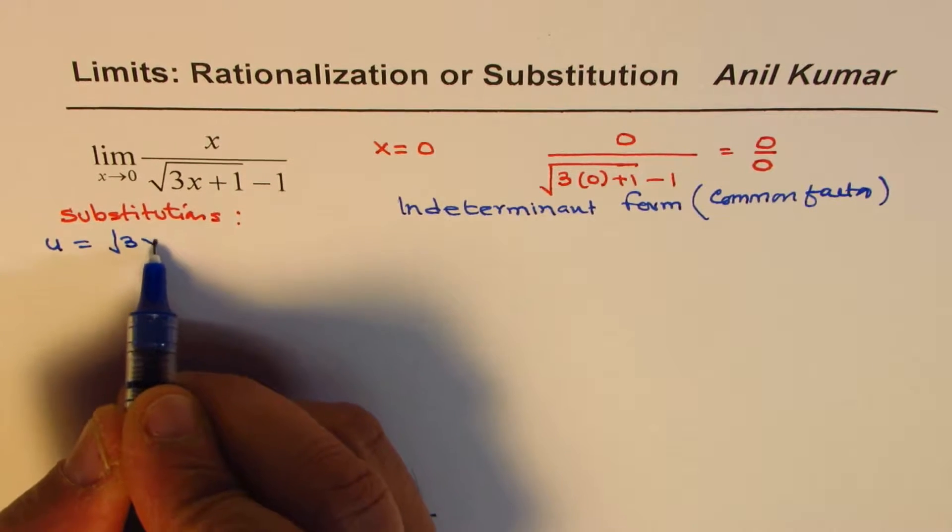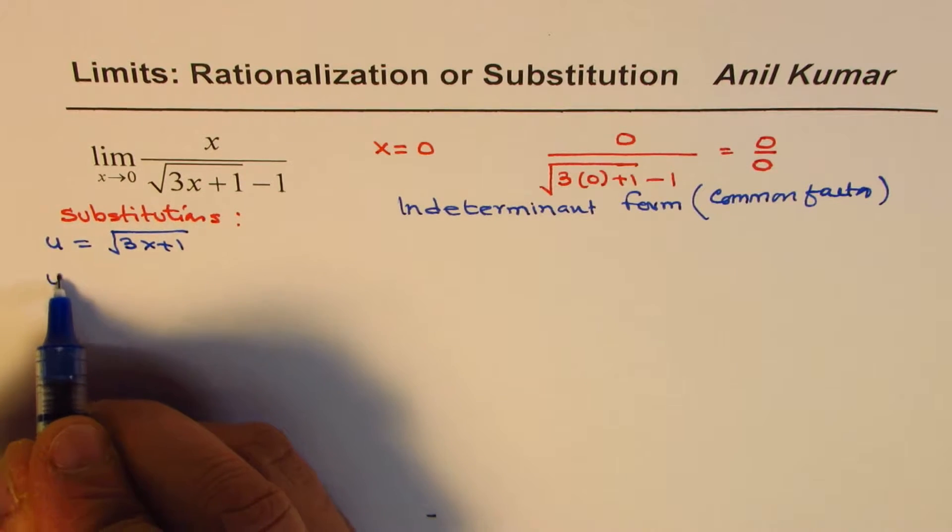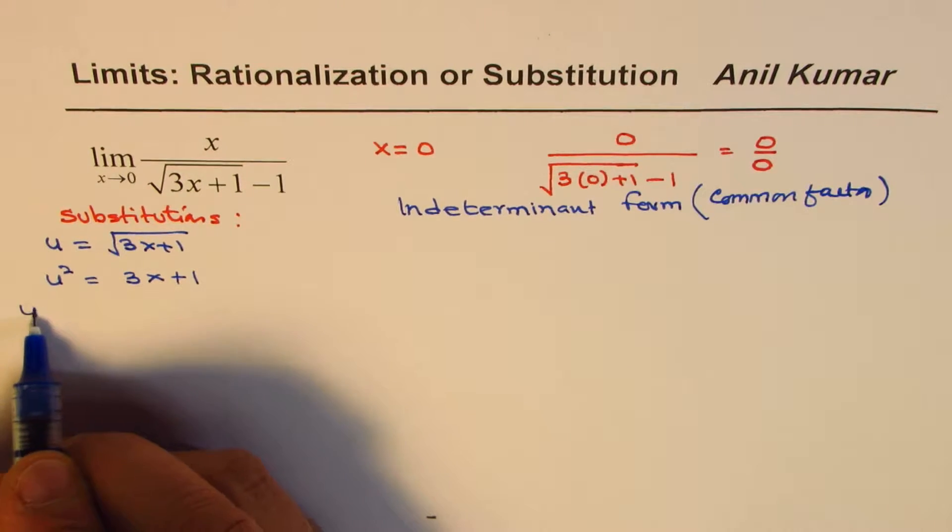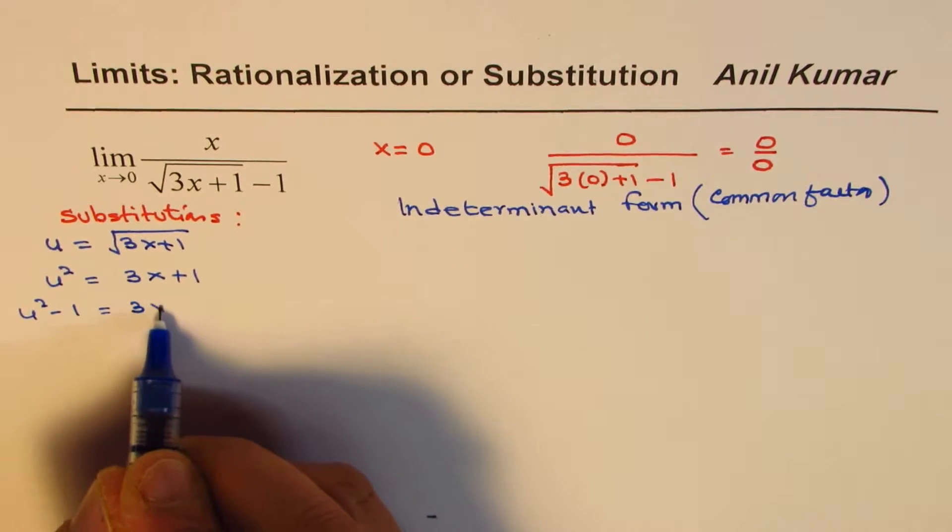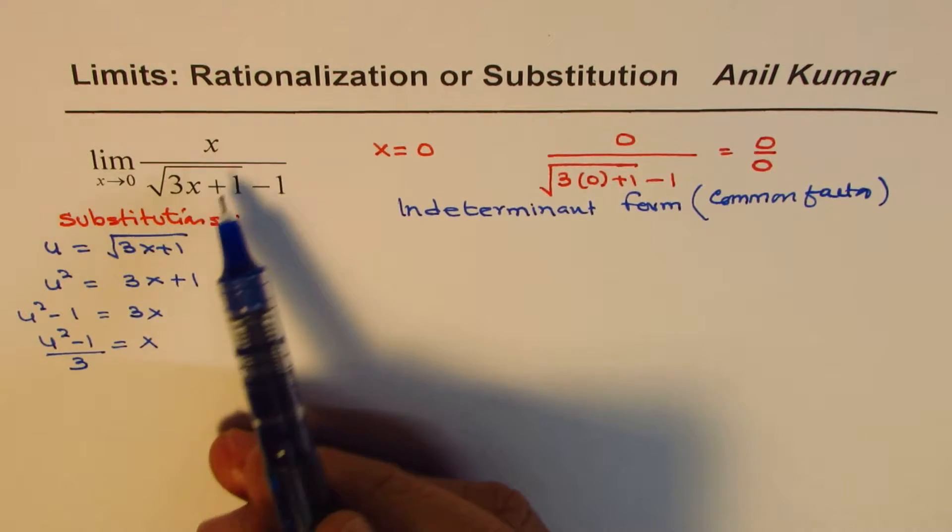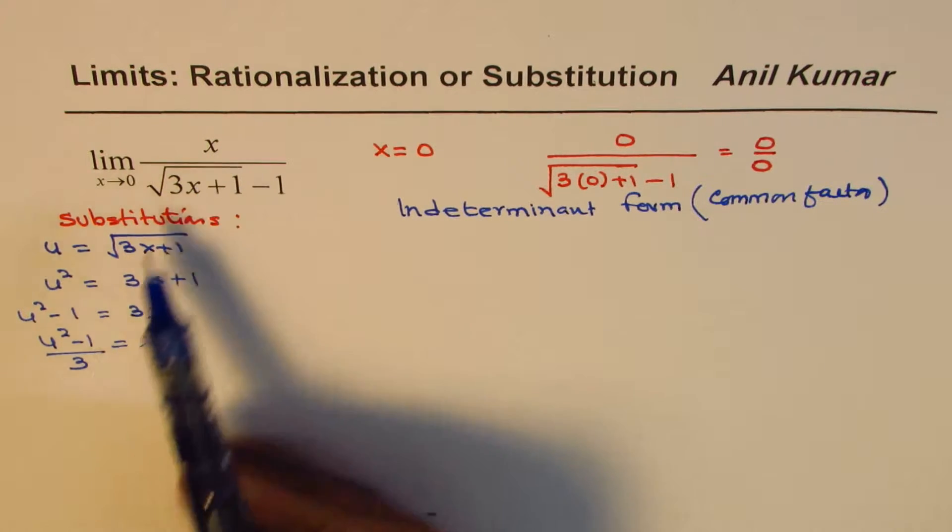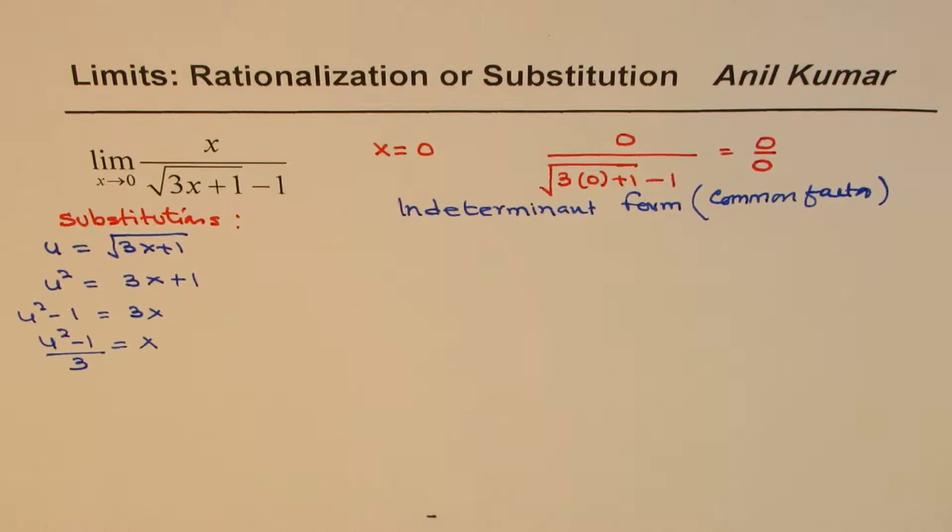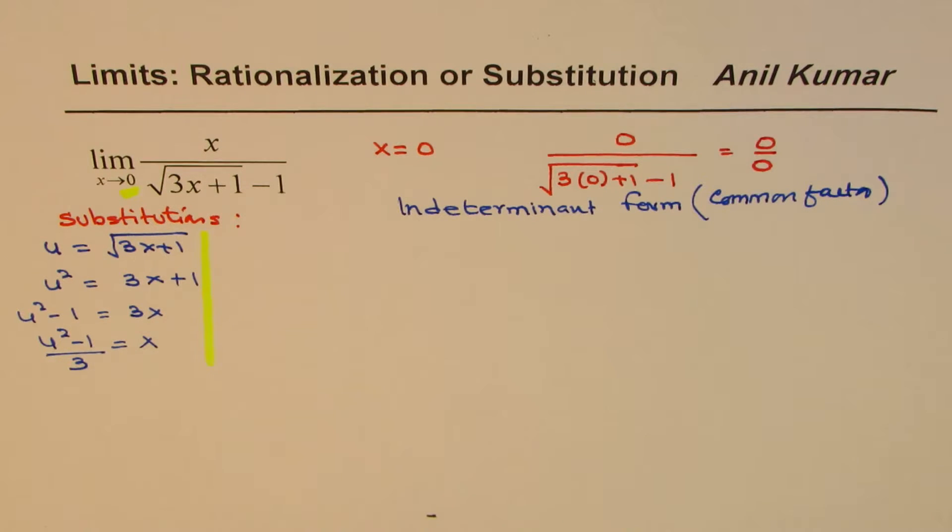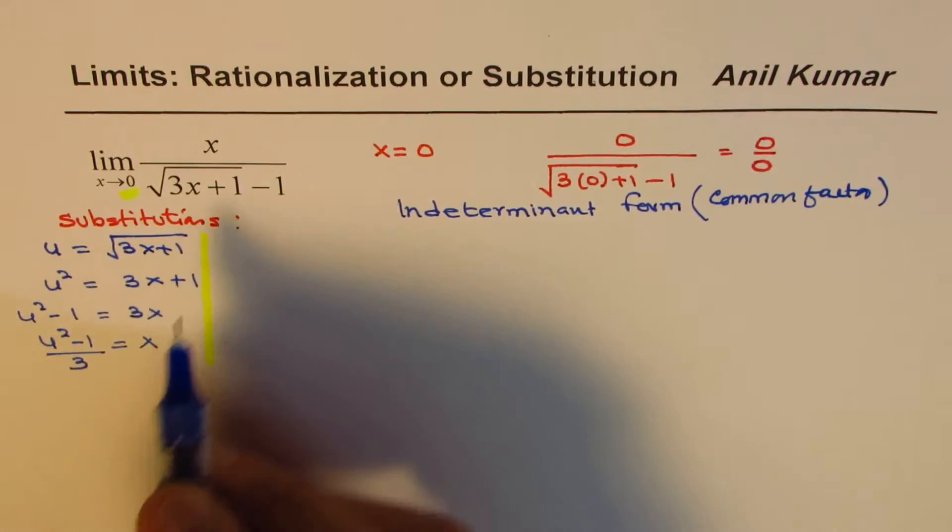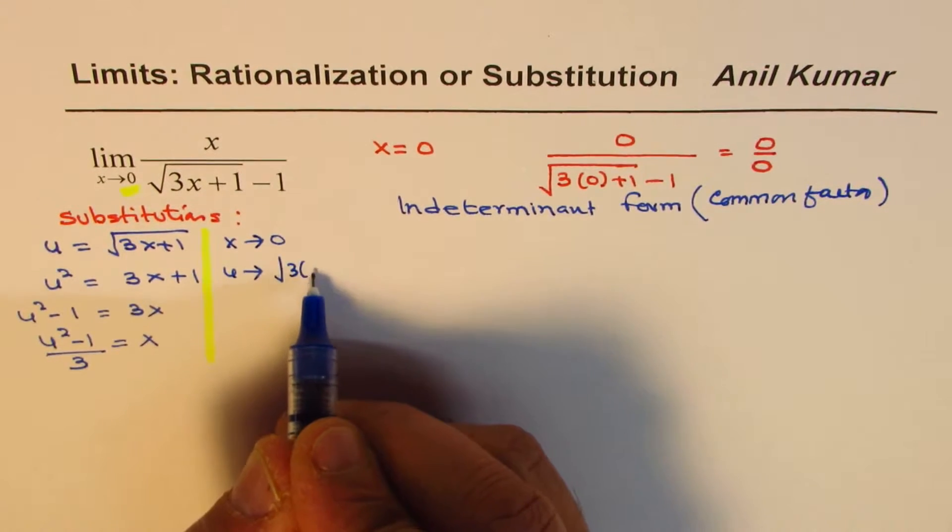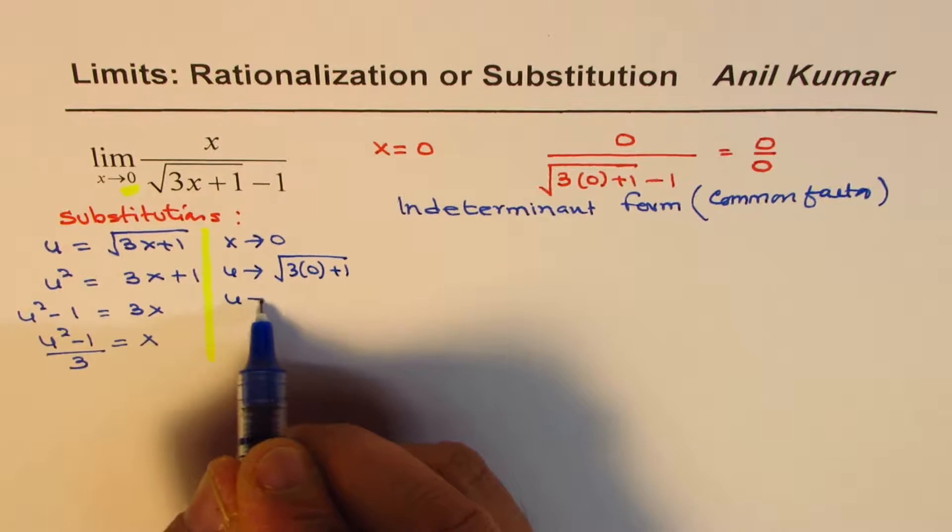So let us substitute this square root thing as some variable. Let us say u equals to square root of 3x plus 1. In that case u squared will be equals to 3x plus 1 and we can find what x is. We will take 1 this side so we get u squared minus 1 equals to 3x, or x is equals to u squared minus 1 divided by 3. Now whenever you do substitution you should always look into this part of the limit also. When x approaches 0 what will u be approaching? So we will substitute x as 0 in this expression. So we get 3 times 0 plus 1. So that means u approaches 1.